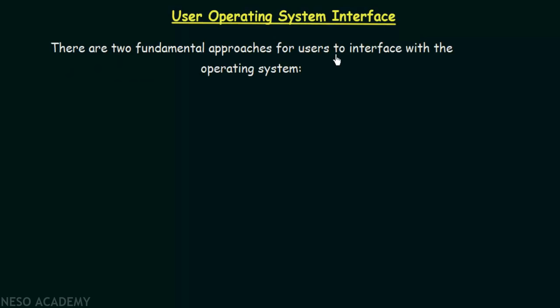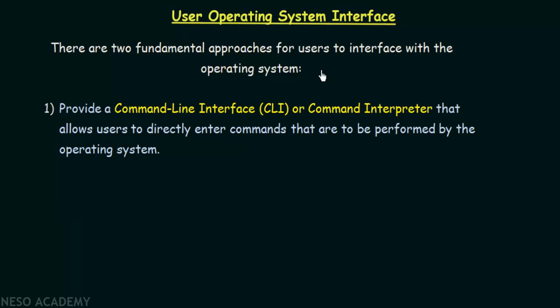There are two fundamental approaches for users to interface with the Operating System. The first one is the Command Line Interface or CLI, also known as the Command Interpreter, which allows users to directly enter commands to be performed by the Operating System. The user has to enter the command of the task they want to perform, and based on that command the Operating System will perform that task.